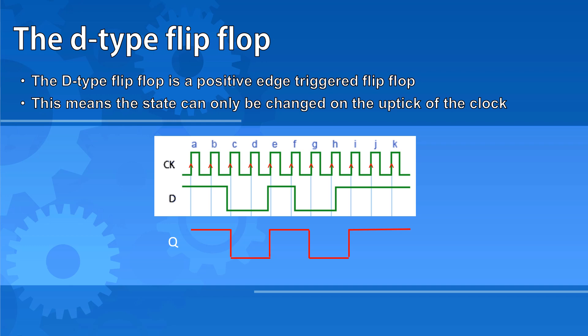So we can see that this red line is actually the output that we would get from this particular D-type flip-flop.